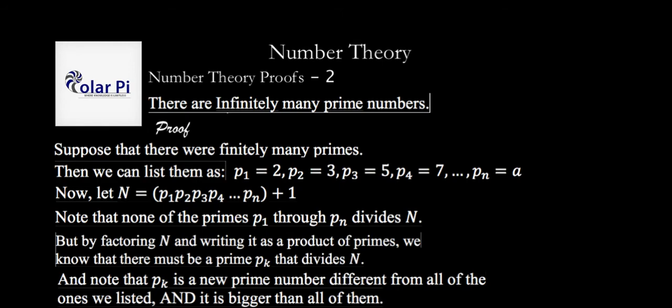And therefore, this one must be something bigger than all of them. The smallest is two we know, and we've written everything in between all the way to the largest, which is A. But this P sub K, which is a new prime, is not in that list and therefore is different and bigger than all of them.